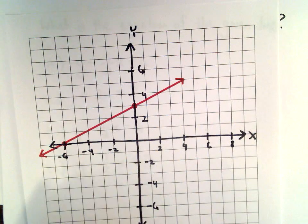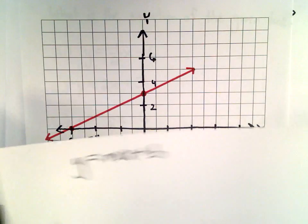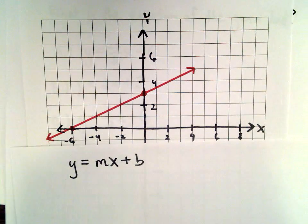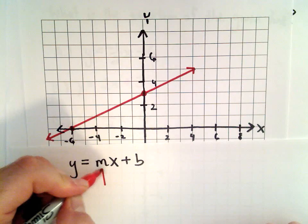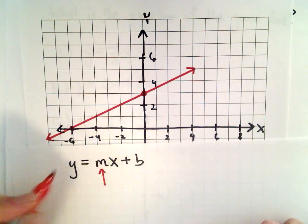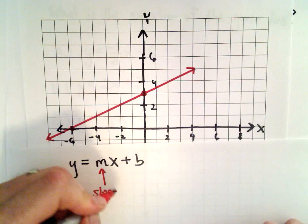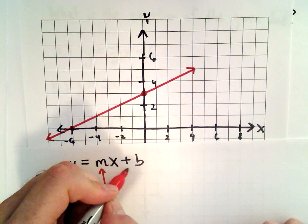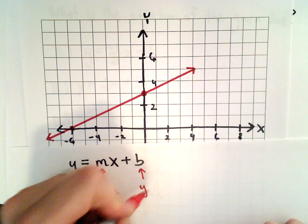So a couple formulas to remember in this case to use. We have y equals mx plus b, and this is the equation of a line. To find the equation to use this, you need to know the slope of the line.